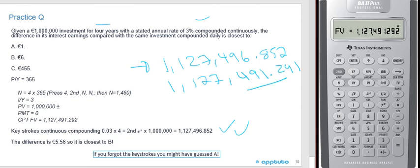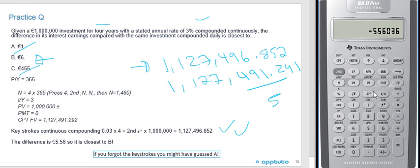I can see the difference is around 5 euros and change, so it can't be 1 euro and it's not 455. Subtracting the daily result from the continuous: 1,127,496.852 minus 1,127,491.292 gives a difference of 5.56 euros — closest to B, 6 euros. On a million euros for four years, there's about a six euro difference between continuous and daily compounding. Unless you remember how to do continuous compounding keystrokes, you'd be guessing. That's the end of this LOS. Thank you.